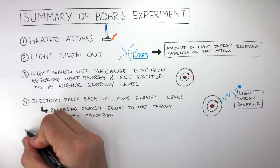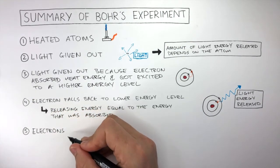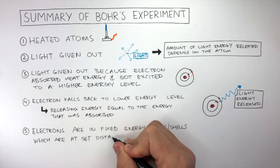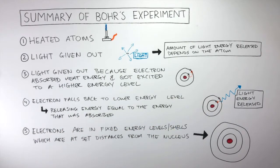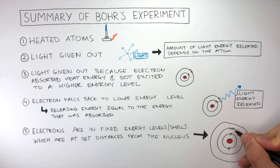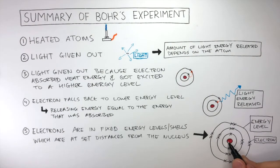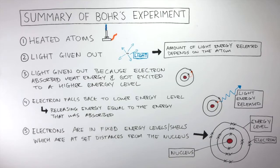And finally, all concluded: electrons are in fixed energy levels and shells which are at set distances from the nucleus. You may recognize this diagram showing two electrons on the first shell, eight electrons on the second shell, and eight electrons on the third shell. These electrons are located on the energy levels and the circle in the middle is the nucleus. Bohr's model is the model we use to describe the atom, and this research was done in 1914, over 100 years ago, and still stands the test of time.